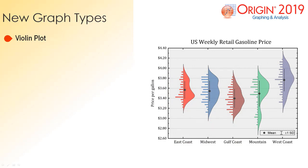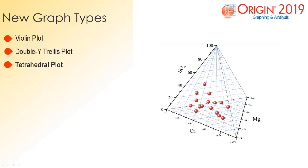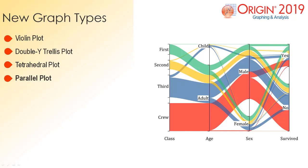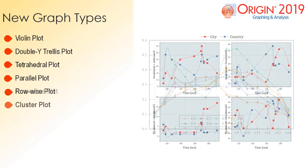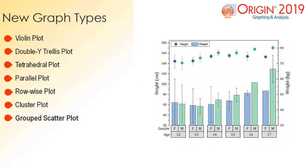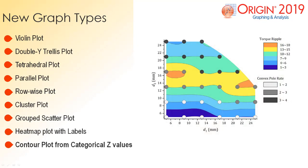New graph types in Origin 2019 include the addition of a violin plot, double wide trellis plot, tetrahedral plot, parallel plot, row wise plot, cluster plot, group scatter plot, heat map plot with labels, and contour plots from categorical Z values.